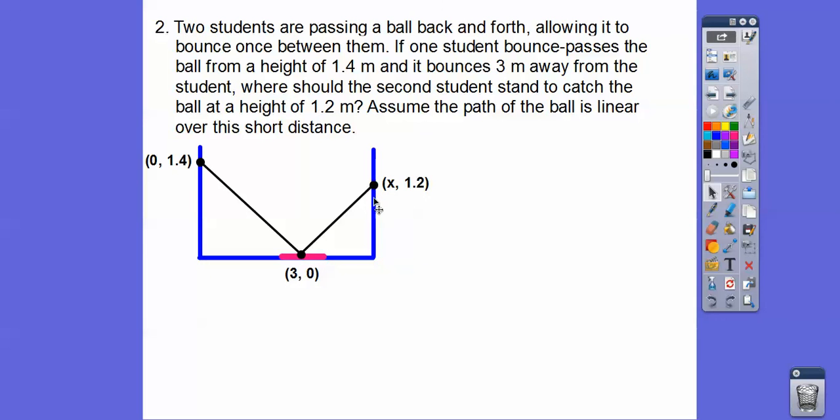And then we're looking for x this time because it's asking where should the second student stand to catch the ball at a height of 1.2 meters. Remember, height is a y answer, so we're looking for this x answer right here. So now, 1.2, this height of 1.2, is going to give us two answers here, and the reason why is because there's another height right here, 1.2. So when we get our two answers, we got to see which one makes more sense. So the smaller number over here is going to be for this height.